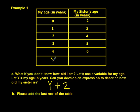For part B, here are the last two rows of our table: y for my age, and y plus two for my sister's age.